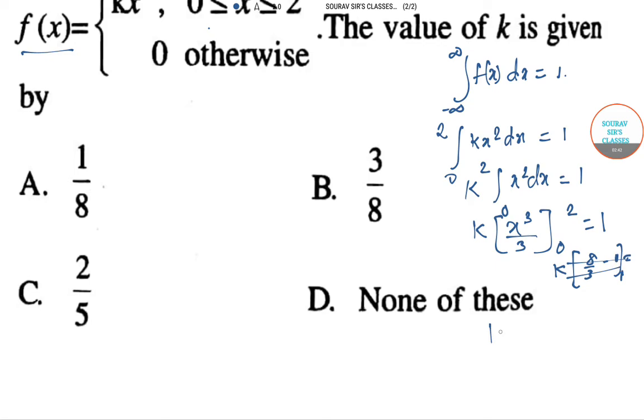So k, 8 by 3 minus 0 equals 1. Therefore k into 8 by 3 will equal 1, which implies that k equals 3 by 8.